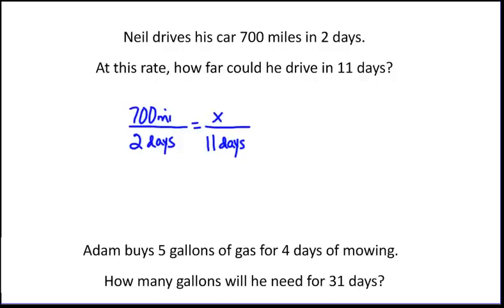Notice how everything matches. Over here, this information is about the first two days. This is about both of these things, about what will happen after 11 days. The tops are both about distance, and the bottoms are both about days. So we have set up our proportions so that everything is correct.